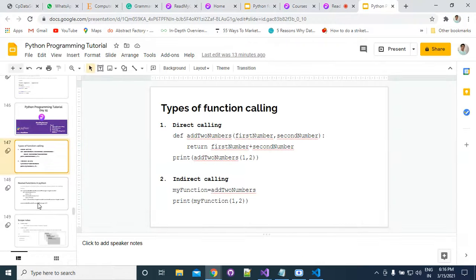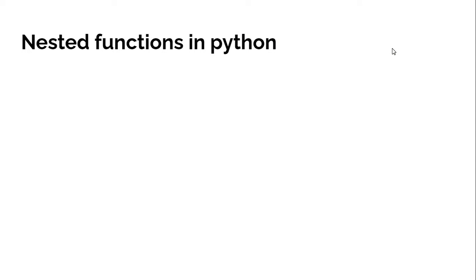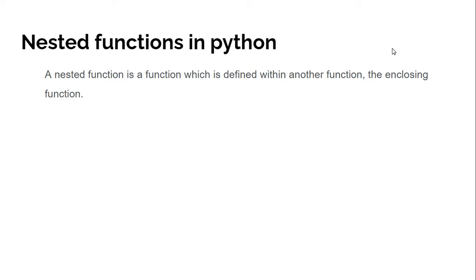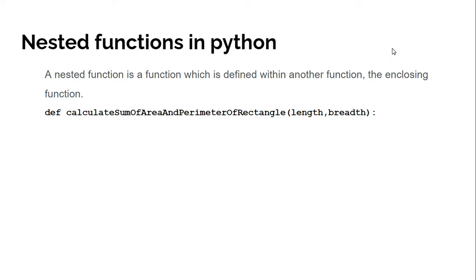The next topic is nested functions. Nested functions are functions defined within another function - also called the enclosing function. We have seen the concept of nesting in previous lectures with lists, loops, and conditional statements. Now we will see nested functions. For example, suppose we want to write a function to calculate the sum of area and perimeter of a rectangle - we pass length and width, and inside this function we create two separate functions.